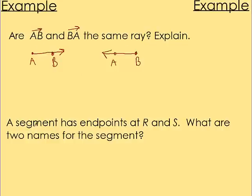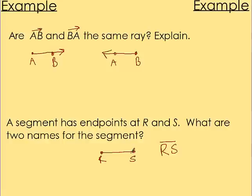A segment has endpoints at R and S. What are the two names for this segment? Draw the segment — a line with two endpoints. The two names will be segment RS with a bar on top, and segment SR with a bar on top — just flip the order. They are two distinct ways of calling it, and they mean the same segment.